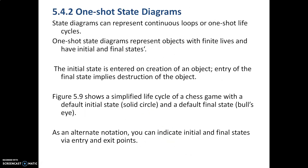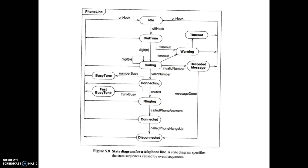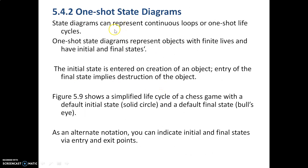The telephone line example is a continuous state diagram — there is no definite end; it can loop back. The next category is one-shot state diagrams, which have a definite start and a definite end. State diagrams can represent continuous loops or one-shot life cycles. One-shot diagrams represent objects with finite lives and have initial and final states. The initial state is entered on creation of an object, and entry of the final state implies destruction of the object.